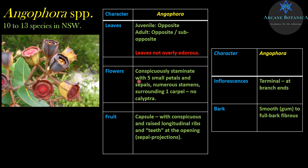Angophoras have conspicuously staminate flowers with five small petals and sepals which are not fused into a bud cap and are not shed as a bud cap. So they don't have a calyptra or an operculum — that's what differentiates them from Eucalyptus and Corymbia. They don't have that fusion of petals and sepals into a cap that is shed. This is a fruiting stage, but on the end of the fruits you've got what we call the remnants of the sepals and petals, reduced to woody teeth but still there.